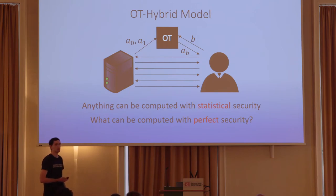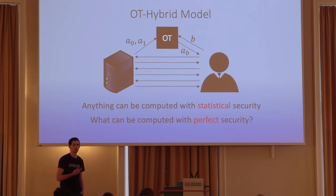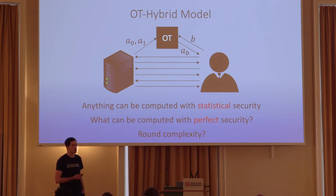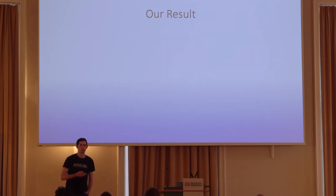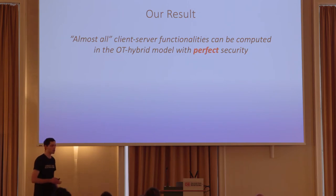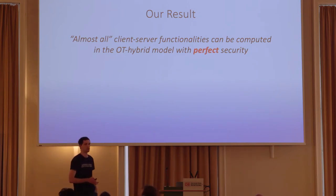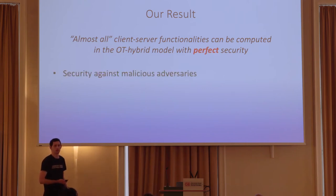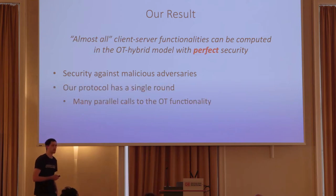What we ask in this paper is: what about perfect security? It turns out that not much was known — only a handful of functionalities were known to have a perfectly secure protocol. We are also interested in the round complexity of such protocols. Informally, we showed that almost any client-server functionality can be computed in the OT hybrid model with perfect security, allowing no error whatsoever, and this protocol works against malicious adversaries.